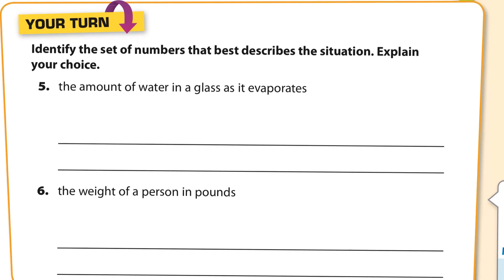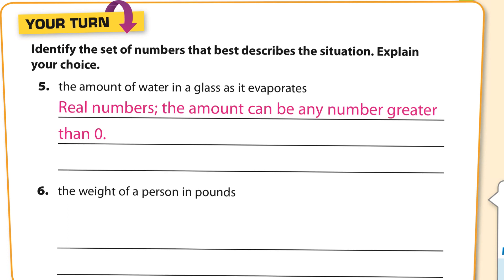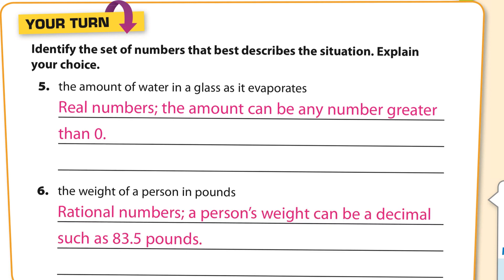For your turn: the amount of water in a glass as it evaporates — real numbers would work, because you can have any number greater than zero, including decimals, integers, and fractions. The weight of a person in pounds — rational numbers, because you can have a decimal such as 83.5 pounds. You might say whole numbers, but you could be in between 83 and 84 pounds, so rational numbers would be best.